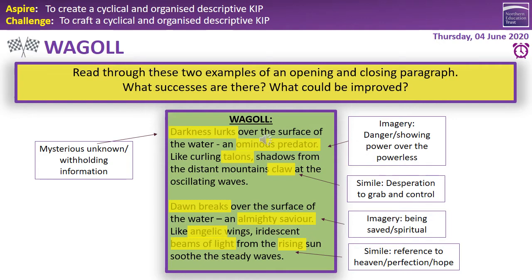Let's have a look at this 'waggle.' We can see straight away we've got a mysterious unknown opening — it's withholding that information, so it hooks us as a reader. As we move throughout, it says: 'Darkness lurks over the surface of the water, an ominous predator.' So we've got this imagery, this danger showing power over the powerless. 'Like curling talons, shadows from the distant mountains claw at the oscillating waves.' So we've got this simile — desperation to grab and control.